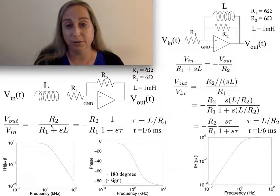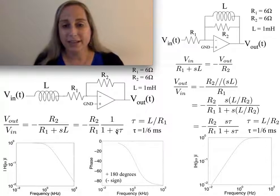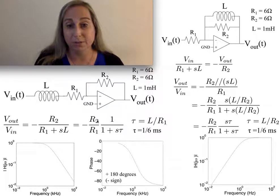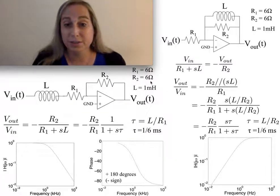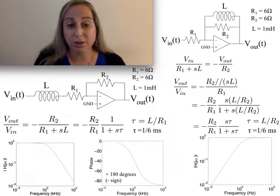If I look at this and do a little rearranging, this gives me R2 over R1 times 1 over (1 plus S tau). This is a typical low-pass response. If R1 and R2 equal 6 ohms, I get a gain of minus 1, so the magnitude is 1, and then I find the frequency response.